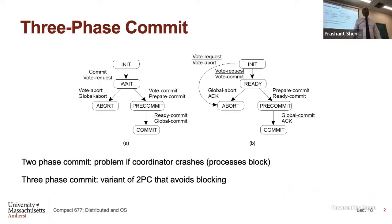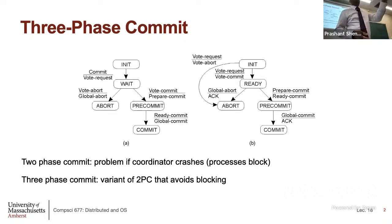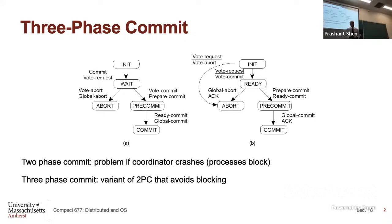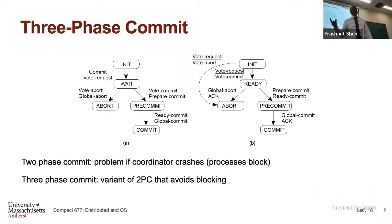So commit happens in two steps in three-phase commit. First you are informed that the decision is to commit, and then once everybody has been told of that decision, you are actually asked to go ahead and commit. In two-phase commit, in one step you are told the decision and then you committed. Here, you do that in two steps. By adding one more stage to the decision-making algorithm, we can now get over the problem of coordinator crashes.